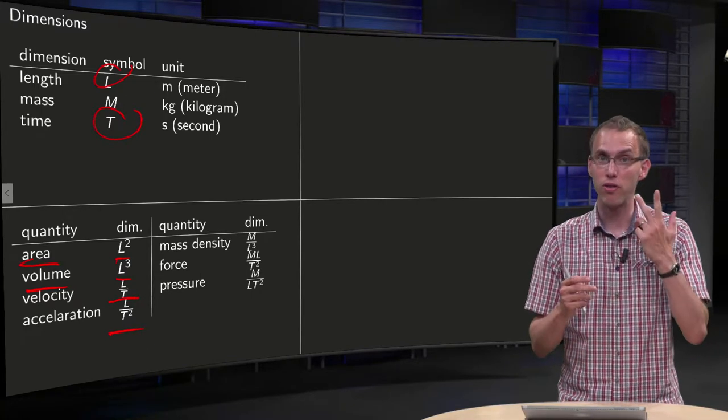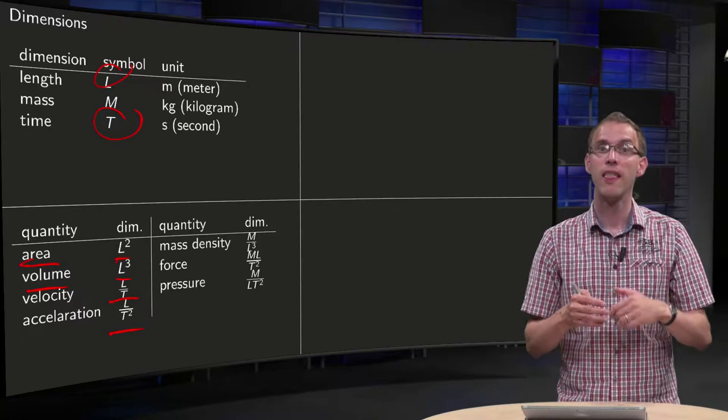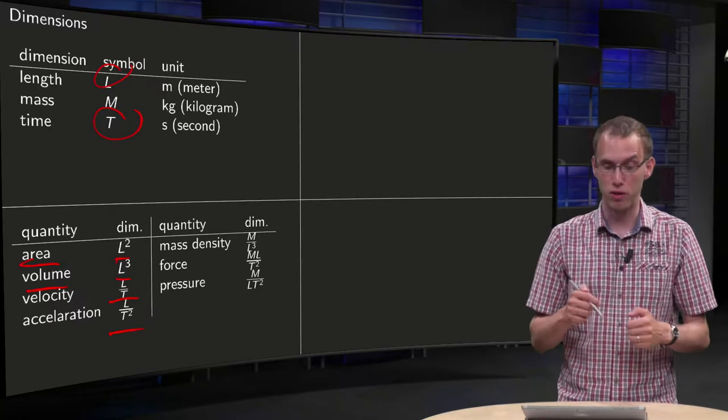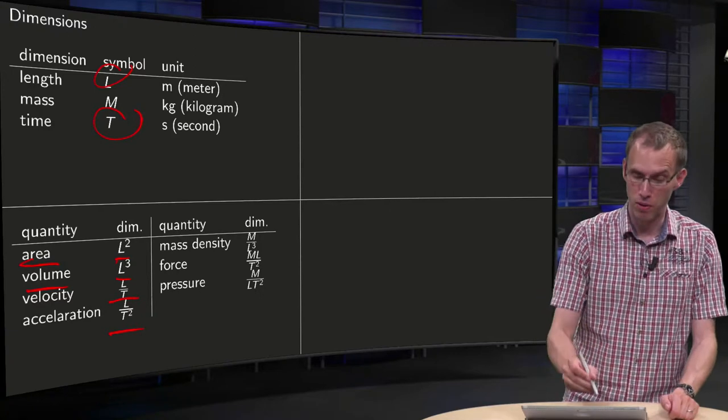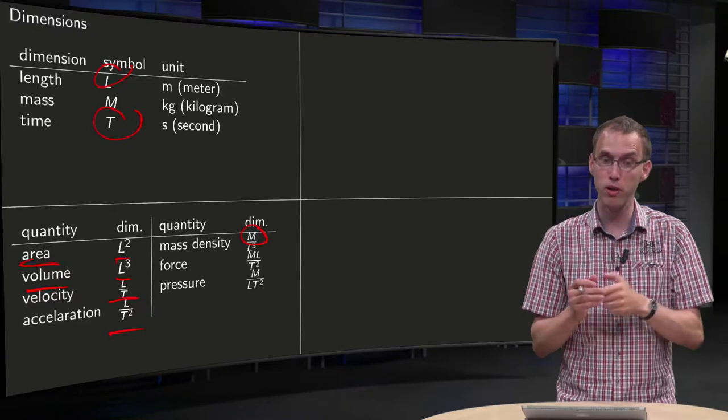So you see with only those three basic dimensions, we already got four important ones. And now we can combine with for example mass. If you look at mass density, it is the amount of mass per volume, so M over L cubed.